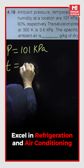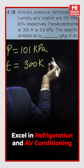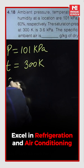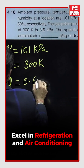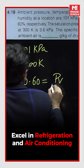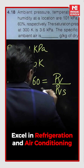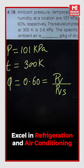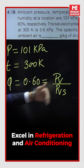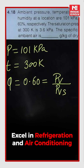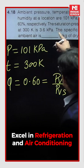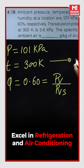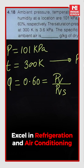The temperature is given as 300 Kelvin — that is the dry bulb temperature. Relative humidity is given as 60%. Relative humidity is defined as the ratio of mass of water vapor to the mass of water vapor under saturated condition, which is also equal to PV upon PVS. The saturation pressure corresponding to the dry bulb temperature is given as 3.6 kilo Pascal.